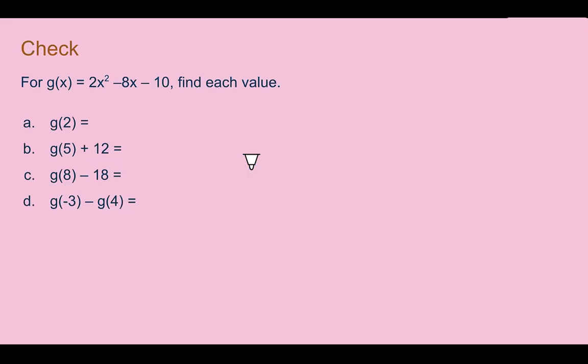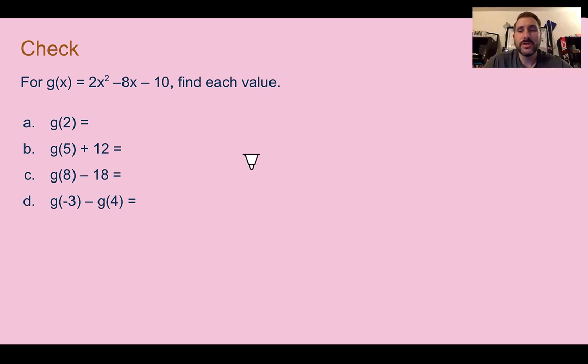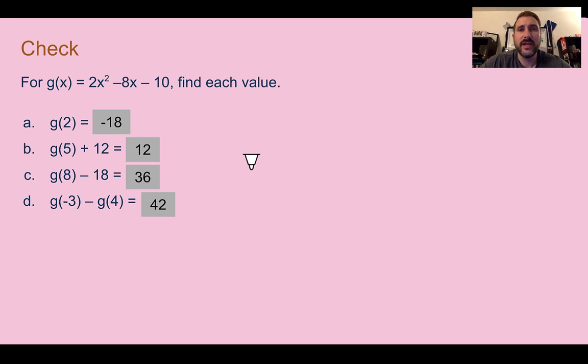Check your understanding: determine the value of each of these for g of x. The answers are: g of 2 is negative 18, g of 5 plus 12 is 12, g of 8 minus 18 is 36, and g of negative 3 minus g of 4 is 42.